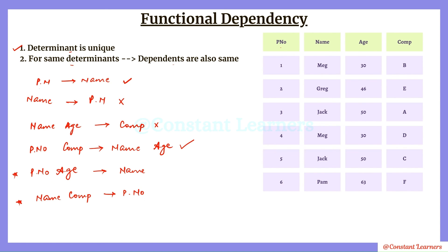Now check for yourself: is Name functionally dependent on Passport Number and Age? Write your answer in the comment section. Also check whether the combination of Name and Company can determine Passport Number — whether Passport Number is functionally dependent on Name and Company. I hope the concept of functional dependency was clear. If you have any doubts, please ask in the comment section and I'll make sure to respond. If you liked the video, please give it a thumbs up, subscribe to the channel, and thank you so much for watching.